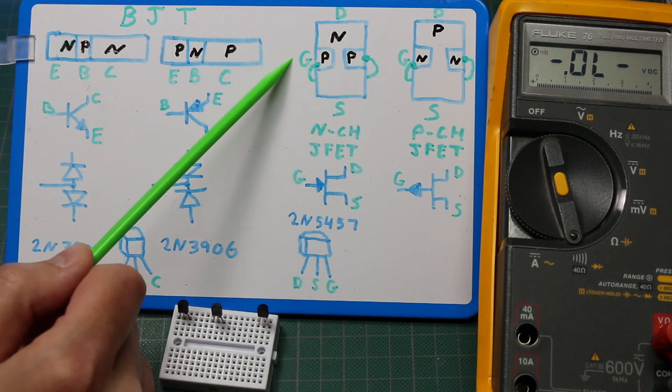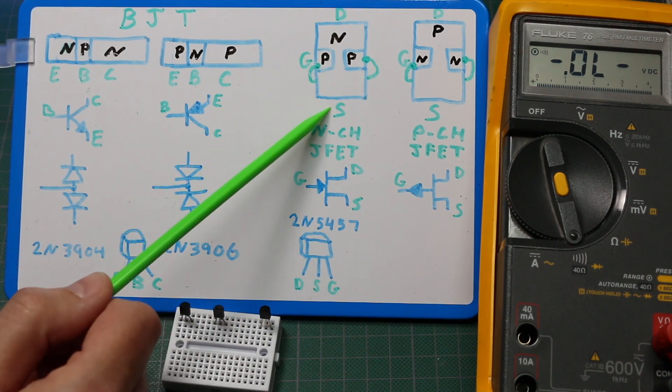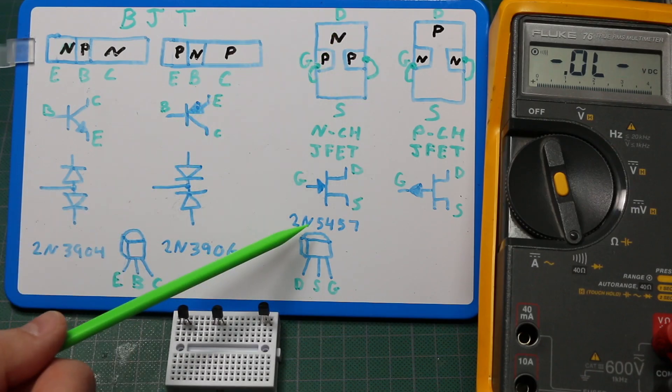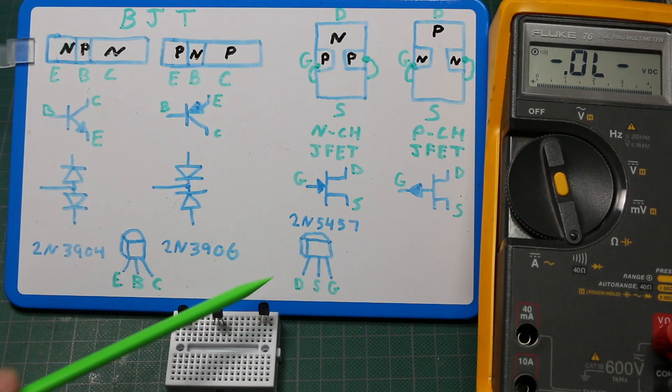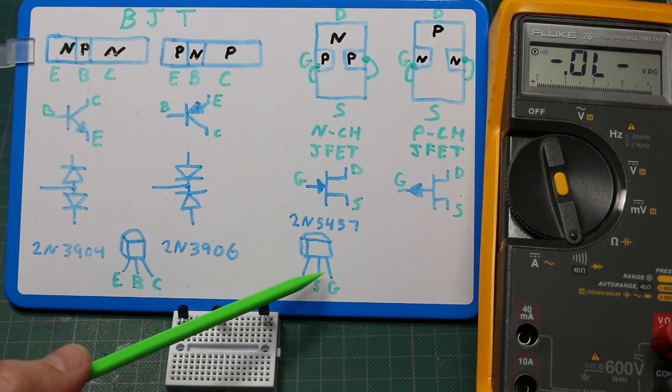But we can test it from gate to drain and from gate to source, even though it's a continuous channel. The 2N5457 I'm using, from left to right, the pins are drain source gate.